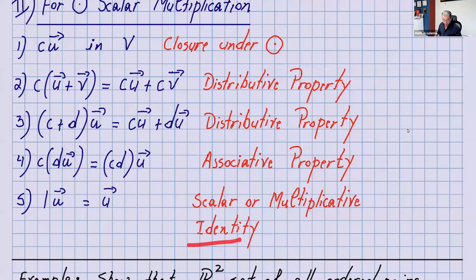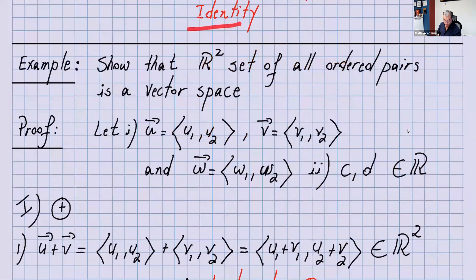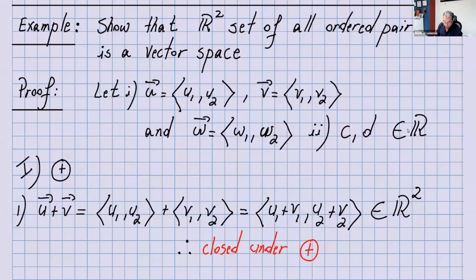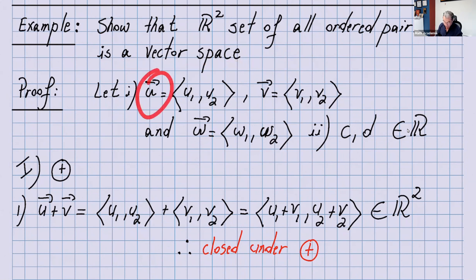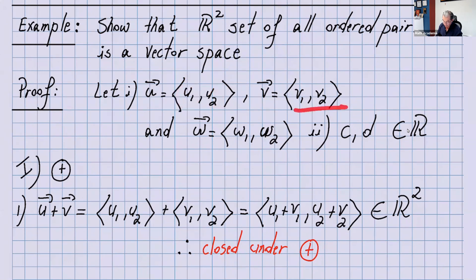Now let's go over an example. Show that R², the set of all ordered pairs, is a vector space. Before starting the 10 axioms, I define U as (U₁, U₂) — these are the components of U, just numbers. V is (V₁, V₂) — these are the components of V. And W is (W₁, W₂). When you write the components, don't put the arrow on top. We also need two scalars, C and D, which are real numbers.